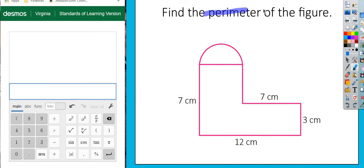All right. First of all, this says find the perimeter. Perimeter means add up all the sides.